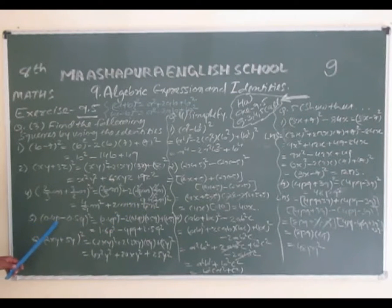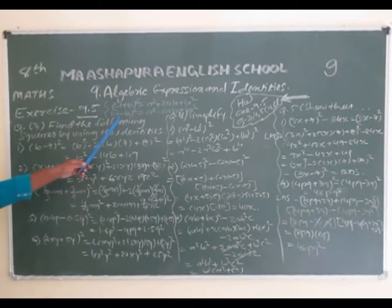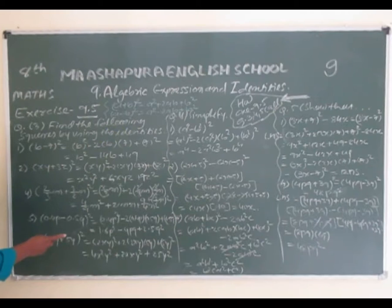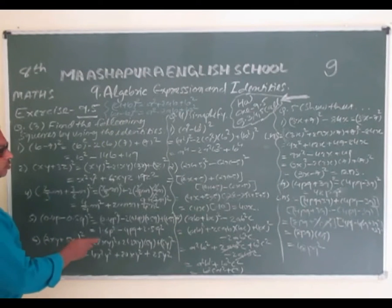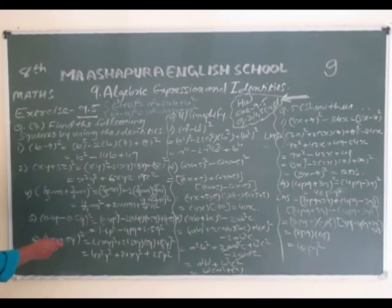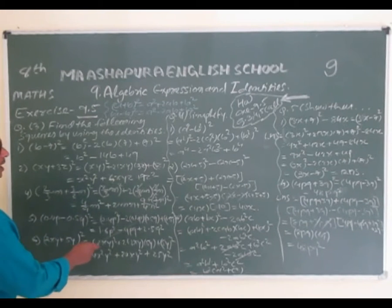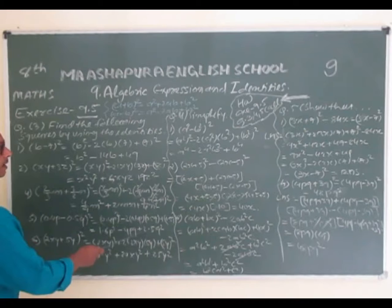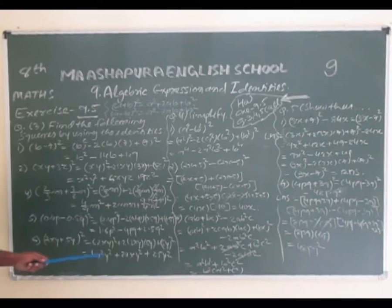(0.4p - 0.5q)² uses the (a - b)² identity: (0.4p)² - 2×(0.4p)×(0.5q) + (0.5q)². First term squared: 0.4² = 0.16, so 0.16p². Middle term: 2×0.4×0.5 = 0.4, so minus 0.4pq. Last term: 0.5² = 0.25, so 0.25q². Finally: 0.16p² - 0.4pq + 0.25q².